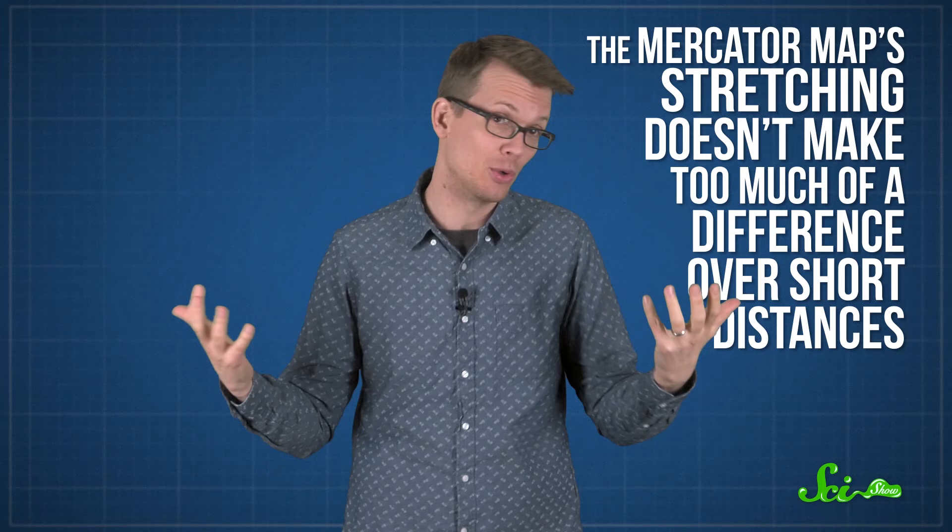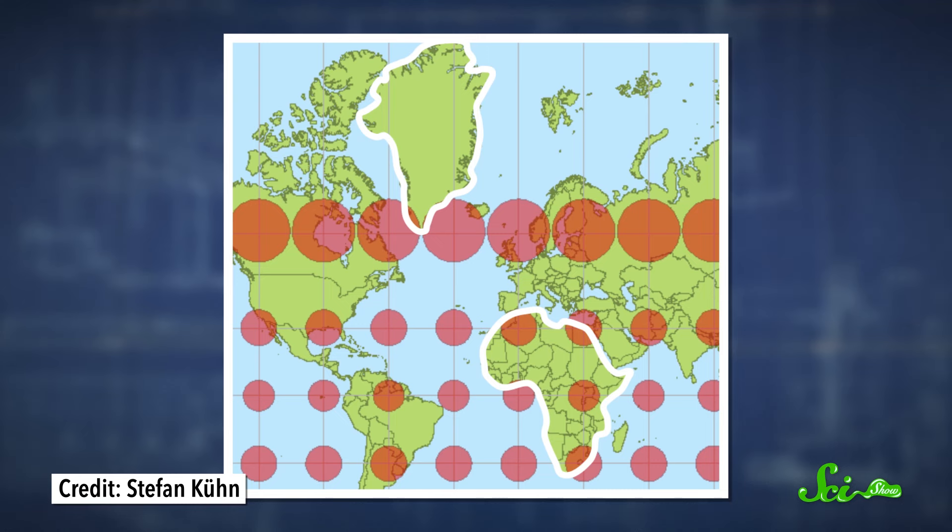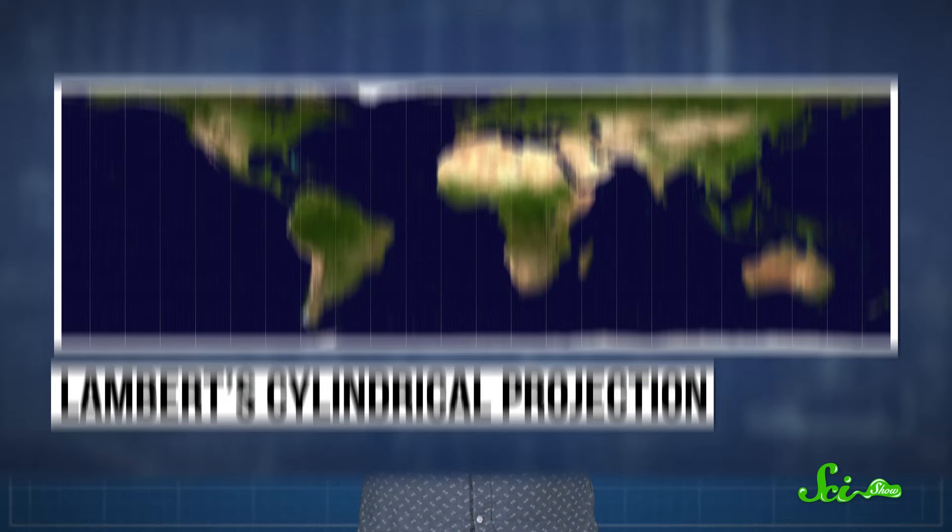When you're trying to plot a route, it's really important to know which direction you're supposed to be aiming for. Plus, the Mercator Map's stretching doesn't make too much of a difference over short distances. But the downside is that when you look at the map as a whole, the North and South Poles look much larger than they are in real life. According to the Mercator Map, Greenland looks about the same size as Africa. But Africa is actually eight times the size of Greenland.